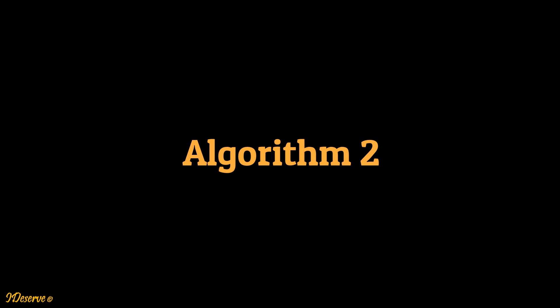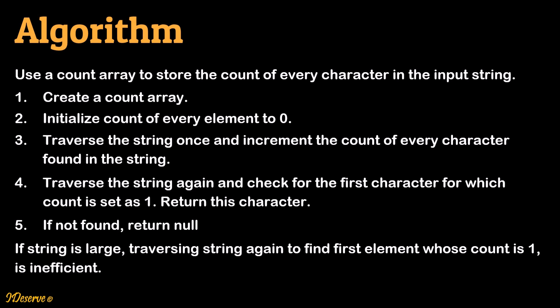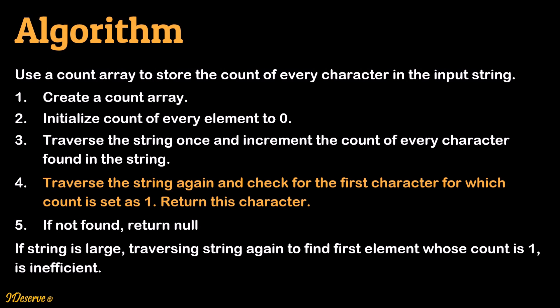Now let's move on to a better algorithm to solve this problem. These steps will be explained in detail with an example in subsequent slides, so do not worry if you do not get it right away. In this algorithm, we use a count array to store the count of every character in the input string. First we create a count array and initialize count of every element to zero. Then we traverse the string once and increment the count of every character found in the string. Then we traverse the string again and check for the first character for which the count is set as 1. Return this character, or return null if not found.